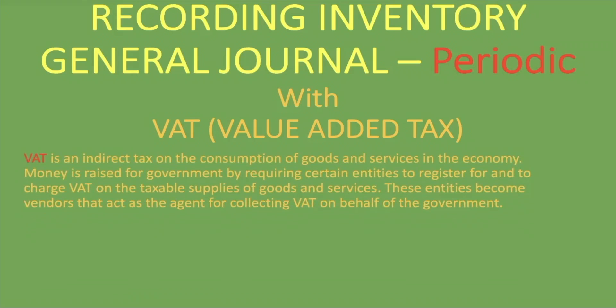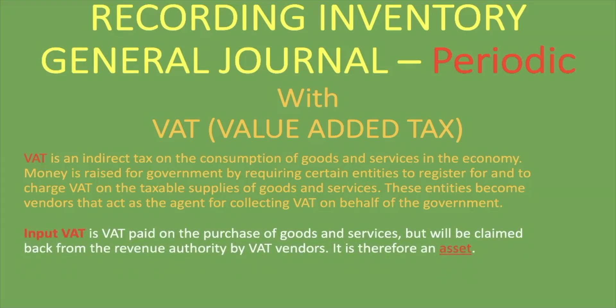VAT is an indirect tax on the consumption of goods and services in the economy. Money is raised for government by requiring certain entities to register for and to charge VAT on the taxable supply of goods and services. These entities become vendors that act as agents for collecting VAT on behalf of the government. Input VAT is VAT paid on the purchase of goods and services, but will be claimed back from the revenue authority by VAT vendors. It is therefore an asset.